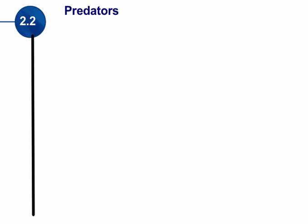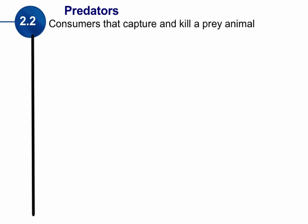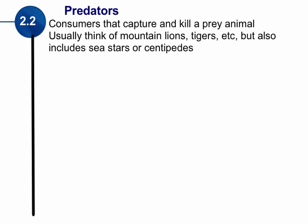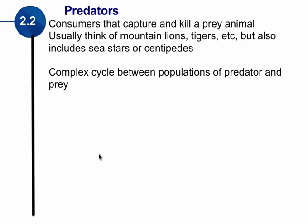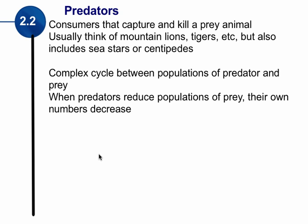We may also classify organisms as predators. Predators are consumers that capture and kill their prey — some other type of animal or organism. We often think of predators as large, dangerous animals like mountain lions or tigers, but it could also be sea stars or centipedes, which still hunt down and prey on other organisms. Predators play a very important role in an ecosystem, but it's actually a complex cycle between predator and prey.